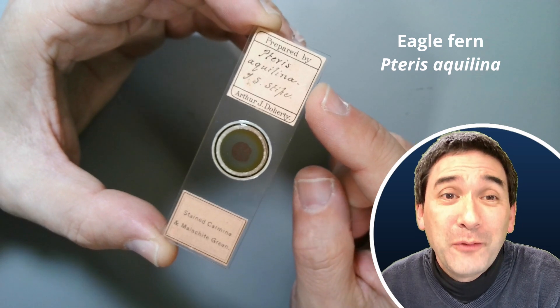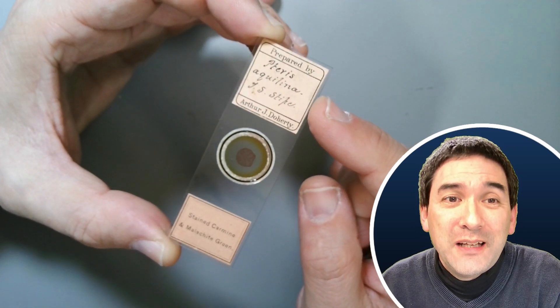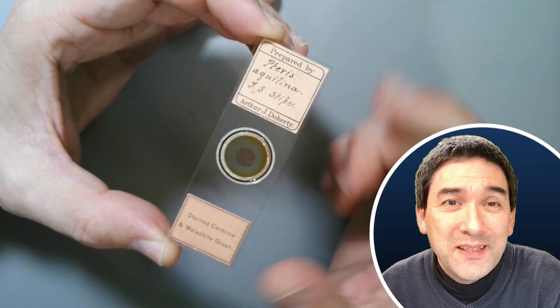The Latin name, the binomial name of the fern is here, Pteris aquilina. That's the name of the fern and the stipe, the transverse section of the stipe, that is the stem.